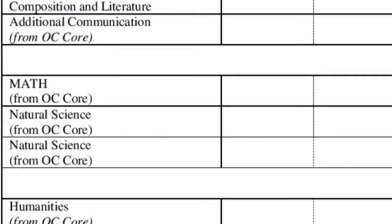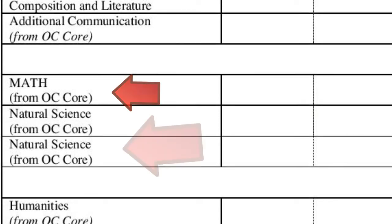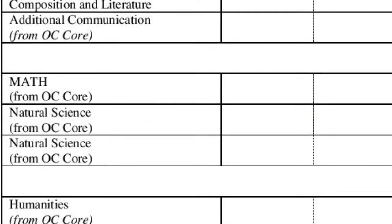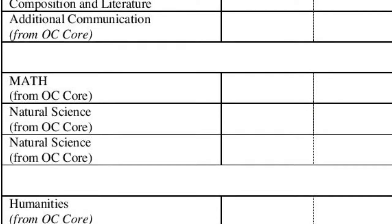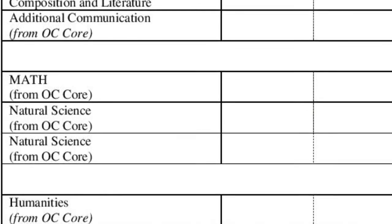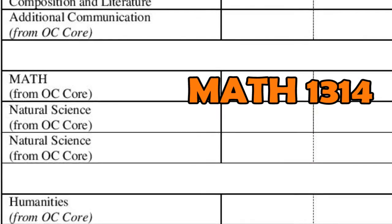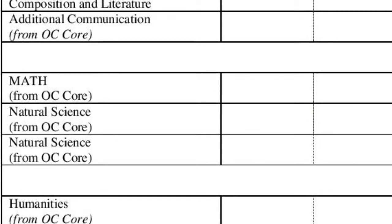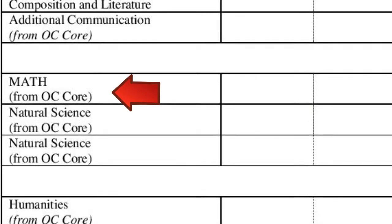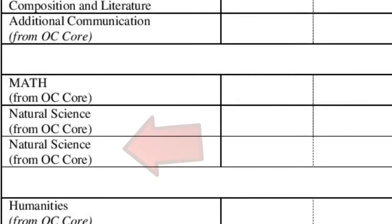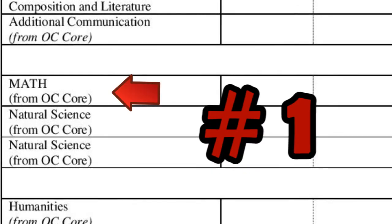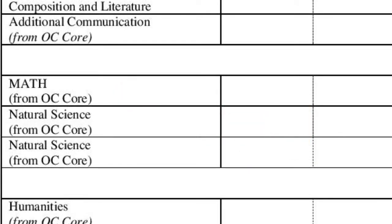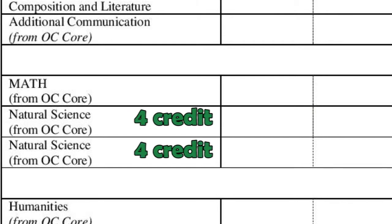In the next section, there is one math and two sciences required. There is an important fact to remember when planning your course schedule. You are required to take Math 1314 College Algebra, or if you've placed higher than College Algebra, the math you placed into before you began your science classes. This means your math class is one of the first classes to take. There are two four-credit science classes required, and these science classes must be two of the same sciences.